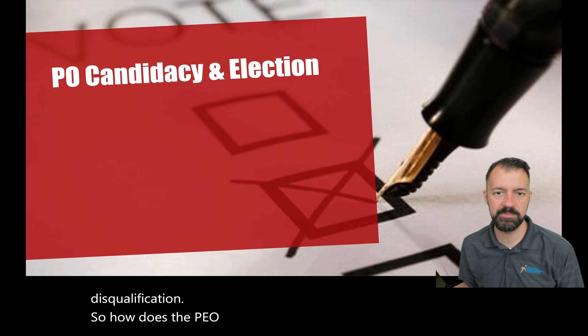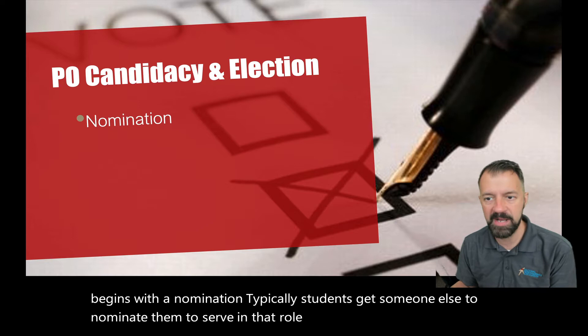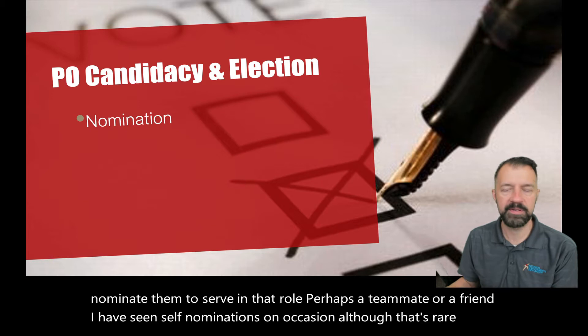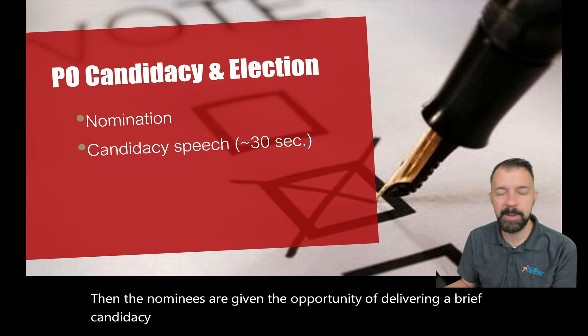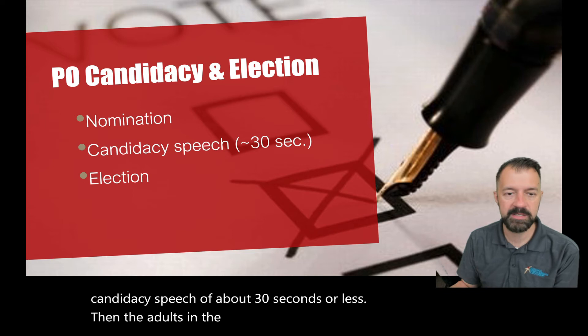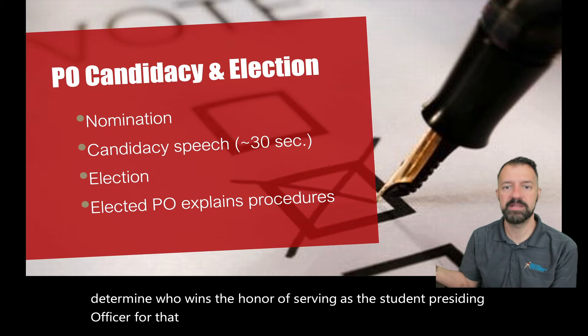How does the PO candidacy and election process work? Well, it begins with a nomination. Typically, students get someone else to nominate them to serve in that role, perhaps a teammate or a friend. I have seen self-nominations on occasion. Although that's rare, it looks better if it comes from someone else. Then the nominees are given the opportunity of delivering a brief candidacy speech of about 30 seconds or less.